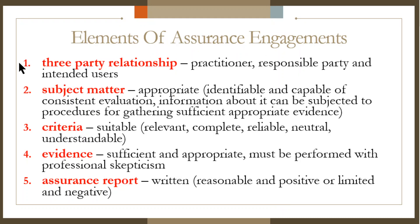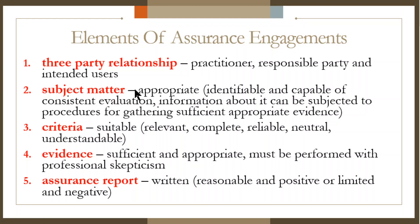To be called an assurance engagement, five elements should be present. First is the three-party relationship — not two-party, not one-party, but three-party. The three-party relationship includes the practitioner, the responsible party, and the intended user. The second element is subject matter, which should be appropriate — meaning identifiable and capable of consistent evaluation — and information about it can be subjected to procedures for gathering sufficient appropriate evidence.